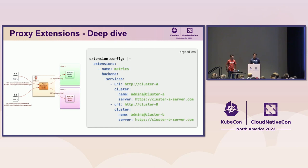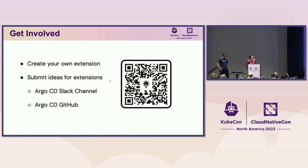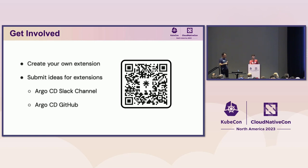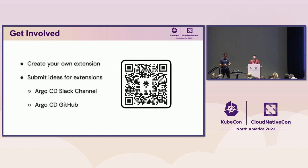That wraps up the proxy extensions portion. If what we talked about today resonated with you, we would love it if you created your own extension. The best way to get started is to look at the documentation — all the links mentioned today are available via the QR code here. If you're not willing to create your own extension but have ideas, we would love to hear from you. Reach out to us on the ArgoCD Slack channel or on the ArgoCD GitHub — open an issue or create a discussion and give us your thoughts.